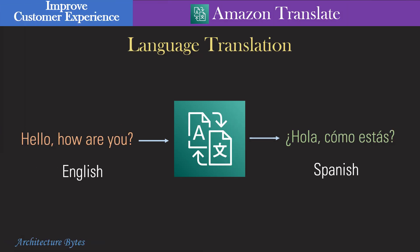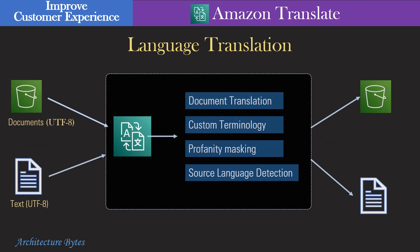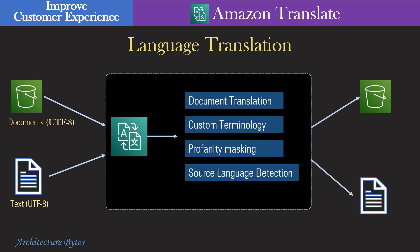Amazon Translate can translate text from one language to another in real-time or in batch. It supports profanity masking, custom terminology, source language detection, and more.